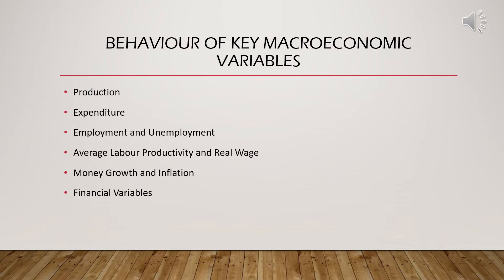Economists who work on business cycle facts have identified some key variables. First is the total overall production of the economy. Second is the overall expenditure of the economy. Third is employment and unemployment. Next is average productivity and real wage. Then money growth and inflation — the rate of increase in price — and also financial variables like the rate of interest and stock prices.